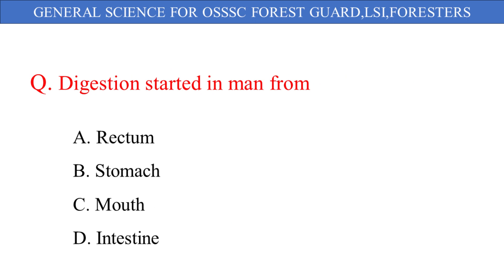Digestion started in man from: A. Rectum, B. Stomach, C. Mouth, D. Intestine. And the correct answer is option C: Mouth.